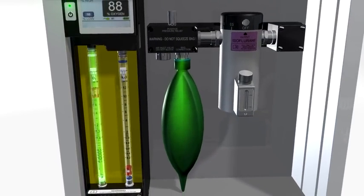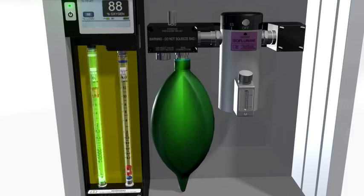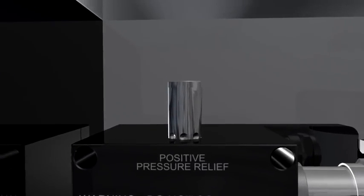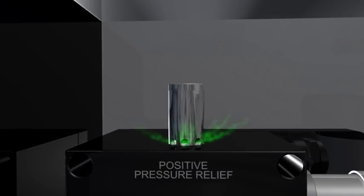The back bar serves three functions. First, the reservoir bag stores the oxygen. It holds up to 2 liters. Second, the pressure relief valve limits pressure in the back bar to 5 centimeters of water, protecting the patient from harm.